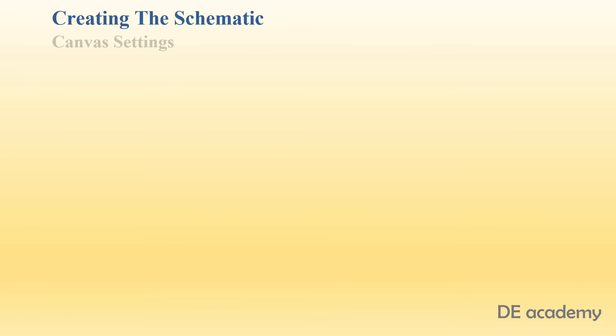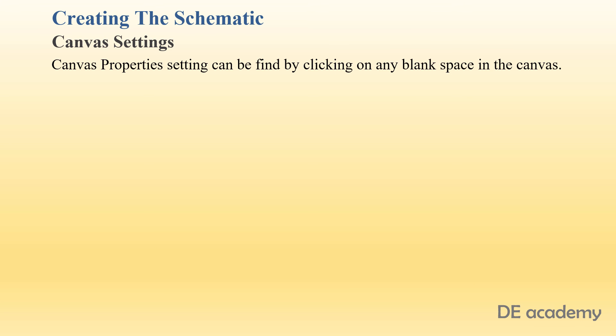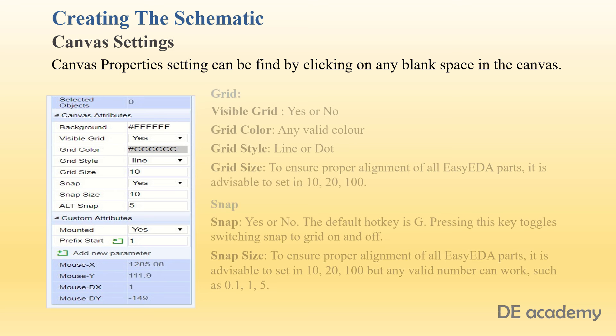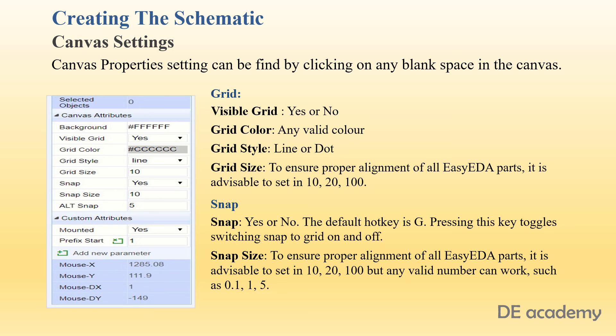We have to make the canvas settings before moving forward. Some of the canvas properties are grid and snap. In grid, we have to set the visibility of the grid, grid color, style, and its size. Similarly for snap, the snap size ensures proper alignment of the parts.